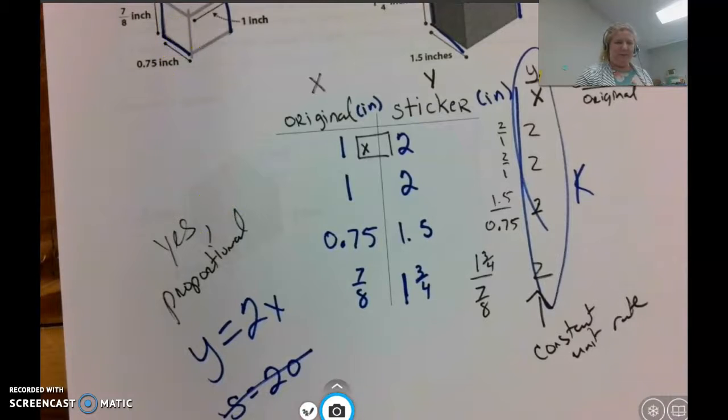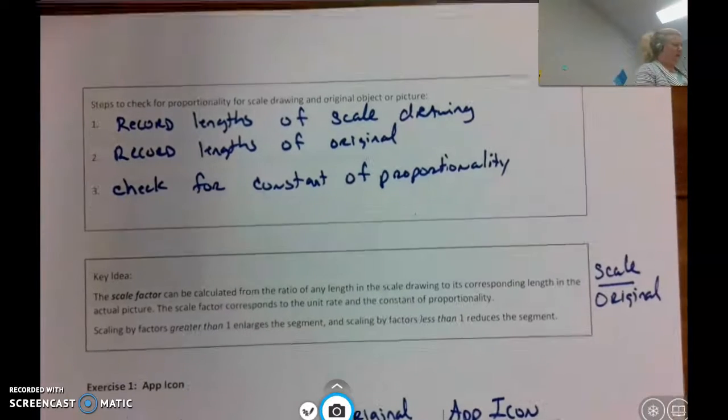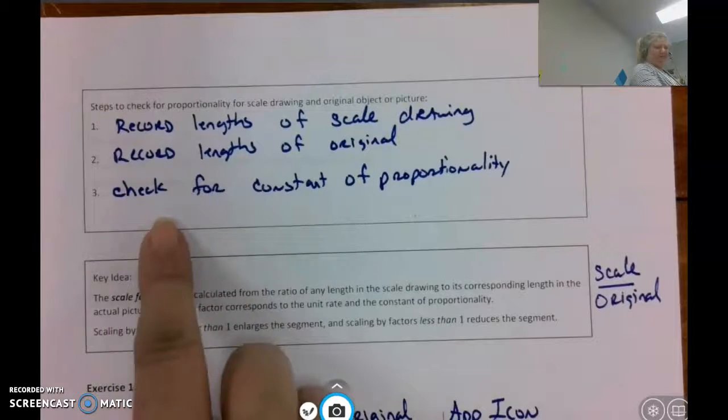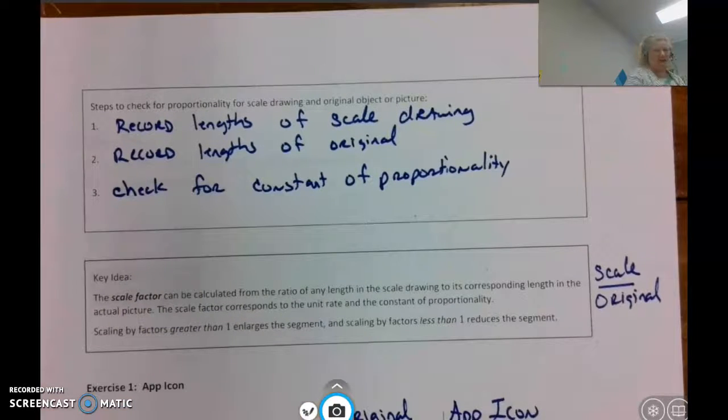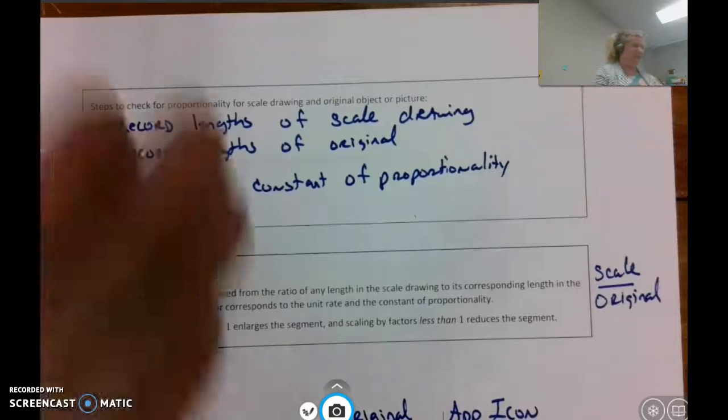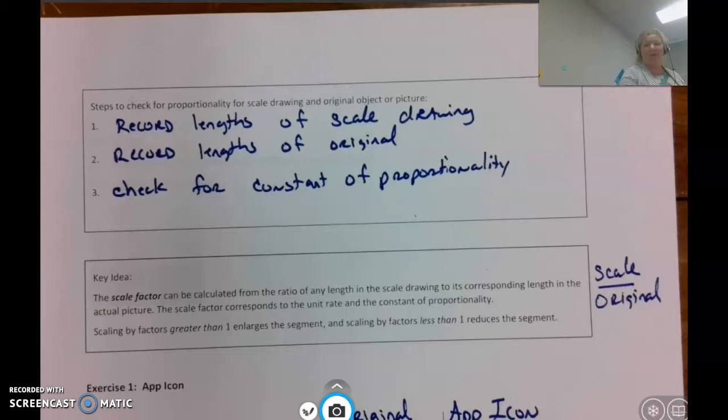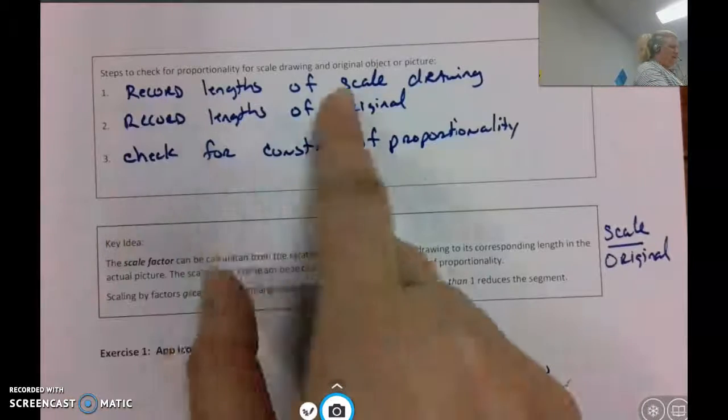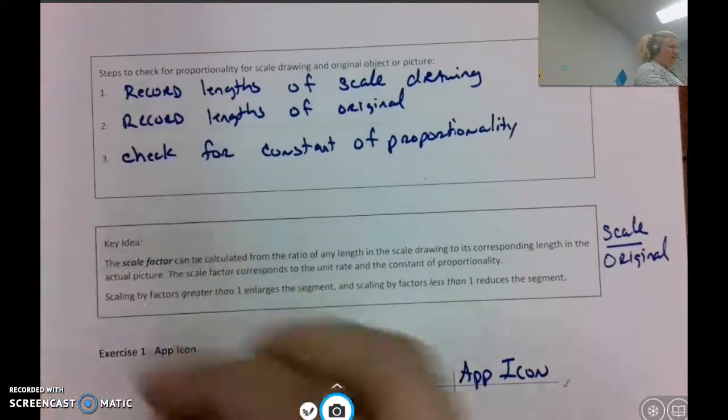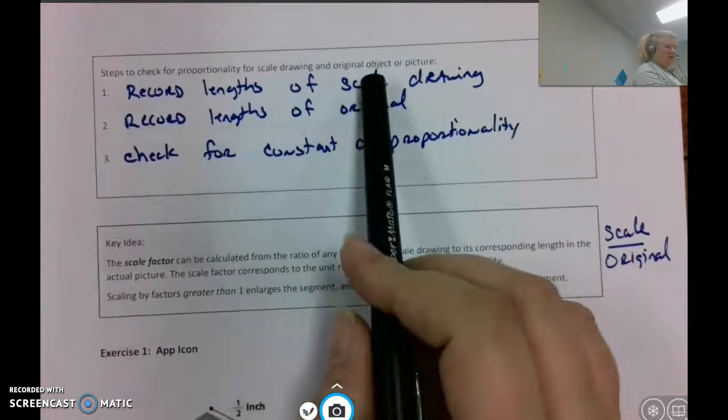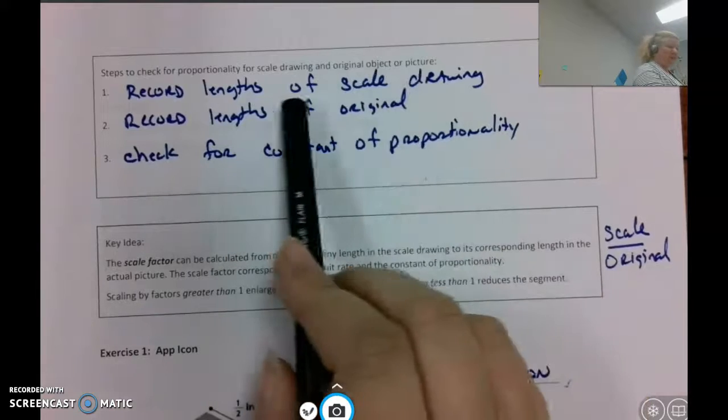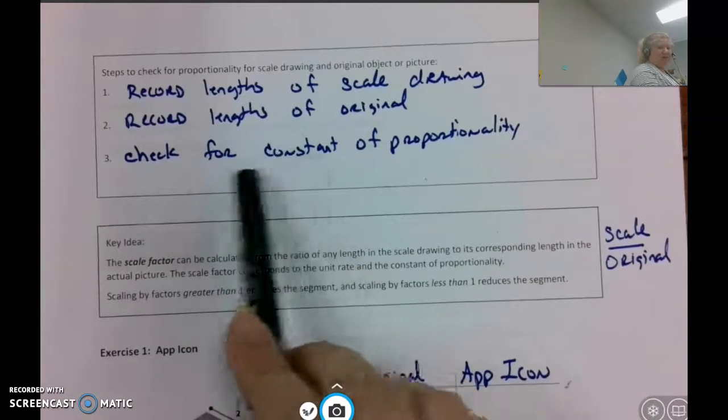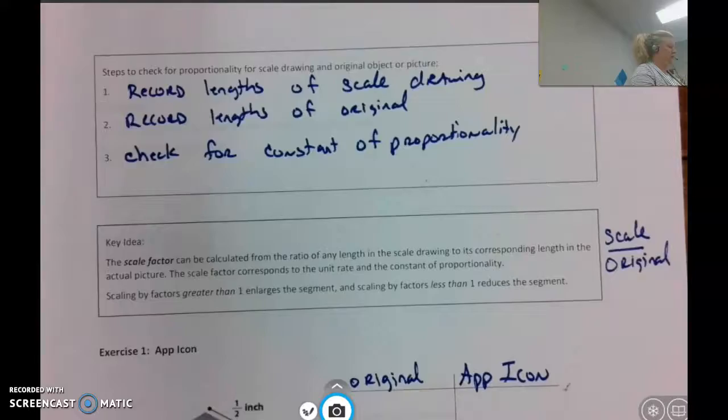Moving on to the next page. On the next page, we do have these steps. I don't particularly think this is necessary, but you're welcome to pause the video and record these down. The steps to check for proportionality for scale drawings and original object or picture is to record the lengths of the scale drawing, record the lengths of the original, and then check for the constant of proportionality.